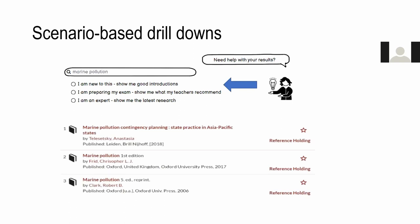I'd like to propose something I call scenario-based drill-down. If a student entered something like "marine pollution" and got a couple thousand hits, she could be offered a help icon presenting different scenarios. She could say "I'm new to this topic, show me good introductions" and results would be ranked accordingly, showing textbooks and introductory works first. Another scenario: she is preparing for her exam and wants to see what her teachers recommend — if the discovery system knew about course reserves, she could see titles featured in course reserve lists or syllabi.